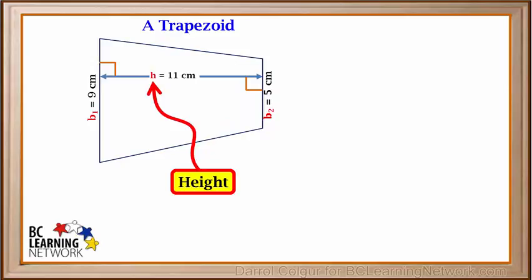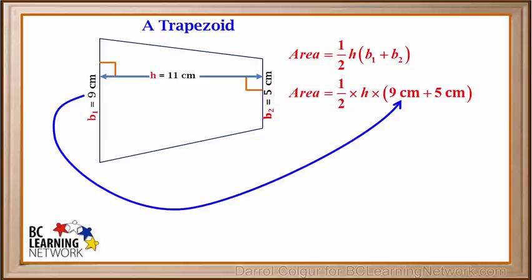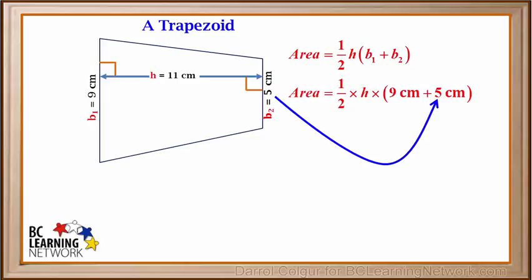We'll give it the symbol H. Now we have enough information to calculate the area. The formula for the area of a trapezoid is area equals one half times H times (B1 plus B2). B1 is 9 cm and B2 is 5 cm.